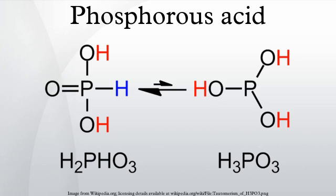Nomenclature and Tautomerism. H3PO3 is more clearly described with the structural formula HPO(OH)2. This species exists in equilibrium with a minor tautomer P(OH)3. IUPAC recommendations are that the latter be called phosphorous acid, whereas the dihydroxy form is called phosphonic acid. Only the reduced phosphorus compounds are spelled with an '-ous' ending.